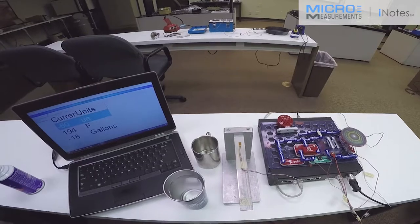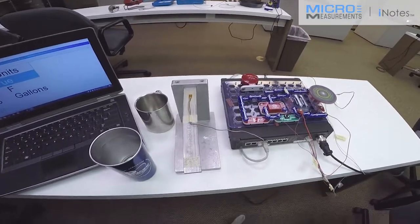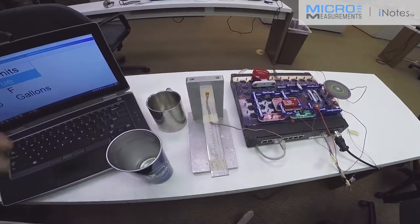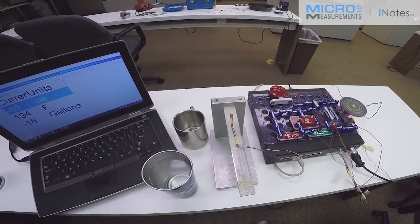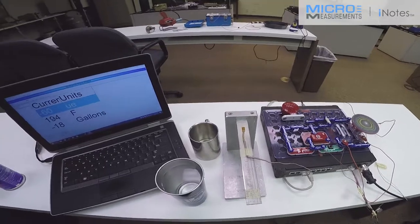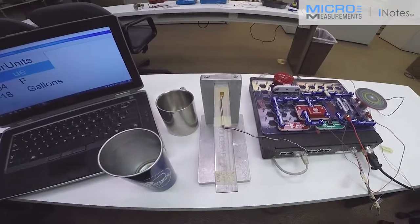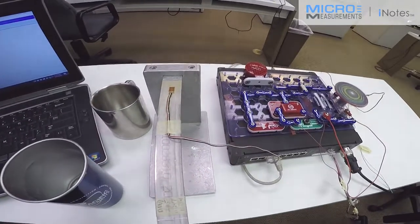So if you want to find out a little more about the 8000 system and its relay capabilities, simply go to our Micro-Measurements page, www.micro-measurements.com and click on the instruments link. Thank you.